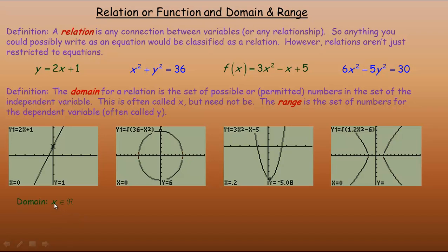So we say the domain for y=2x+1 is the set of real numbers. The way we write that is: x is a member of the set of real numbers — x ∈ ℝ. A lot of people just say x-e-r, which means x is a member of the real numbers. For the range, y could actually be any real number as well. If you look at the graph, y increases to large positive numbers in one direction and large negative numbers in the other, so there's no y value that's impossible. The range is also y ∈ ℝ.